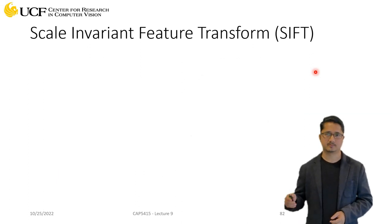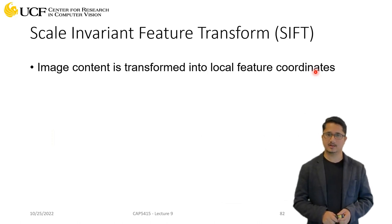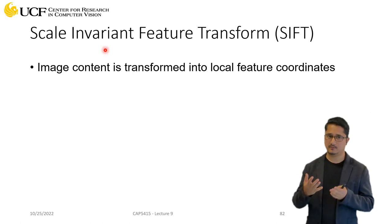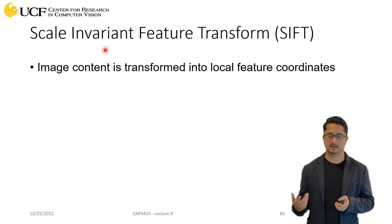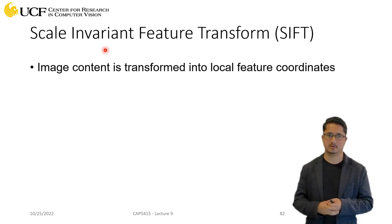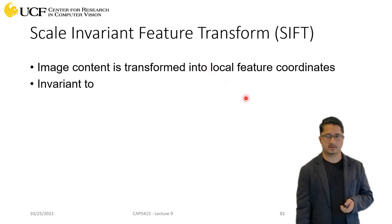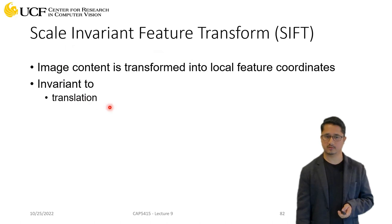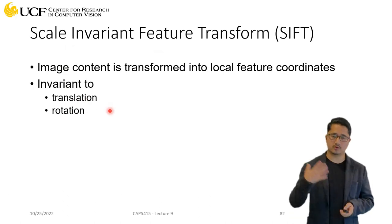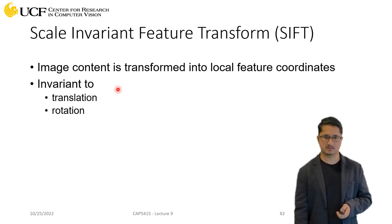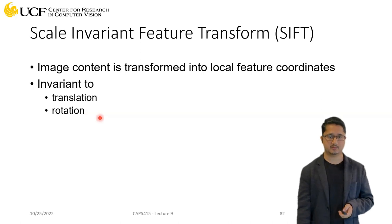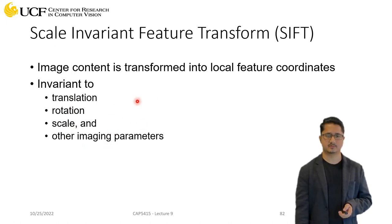SIFT stands for Scale Invariant Feature Transform. As the name says, these features are scale invariant, meaning that even if your objects appear at multiple scales, your features are not going to change. These features are also invariant to translation — if you move your object in the input image you'll still extract the same features — and invariant to rotation, meaning if you rotate your object your features will not change. These are very powerful properties of SIFT features.